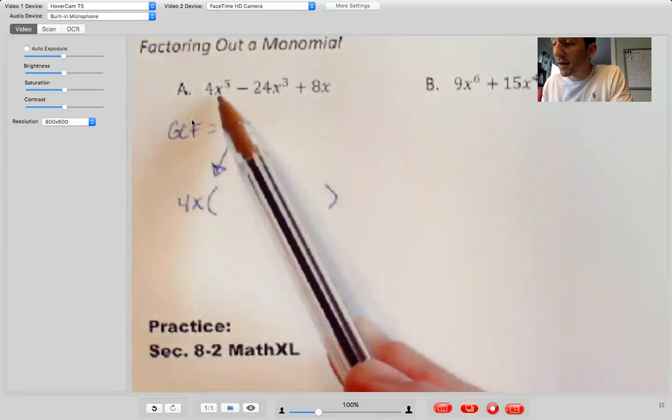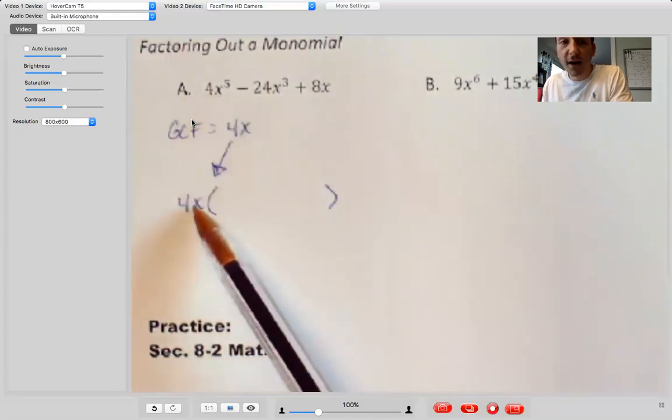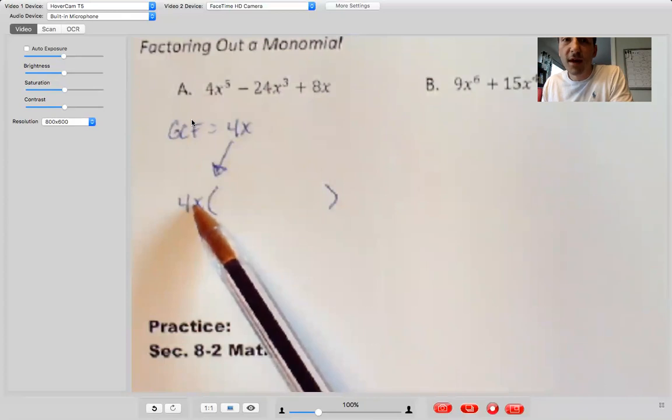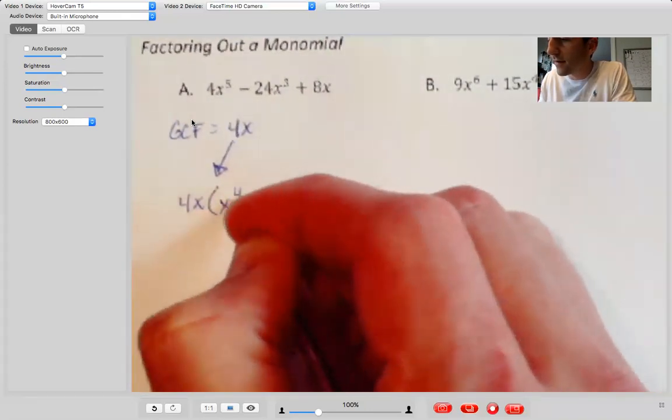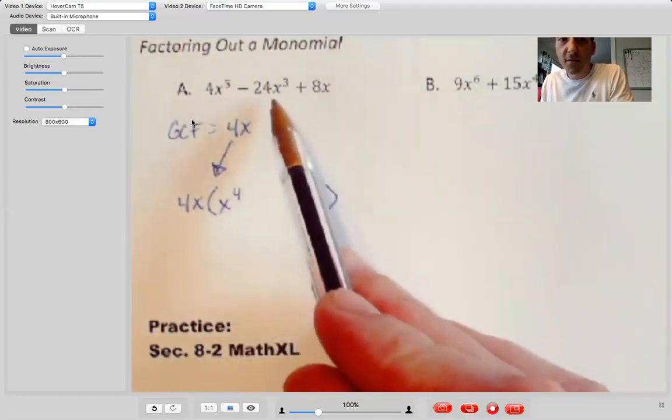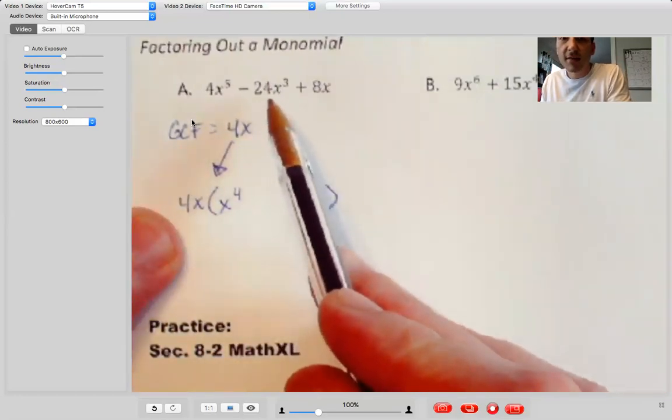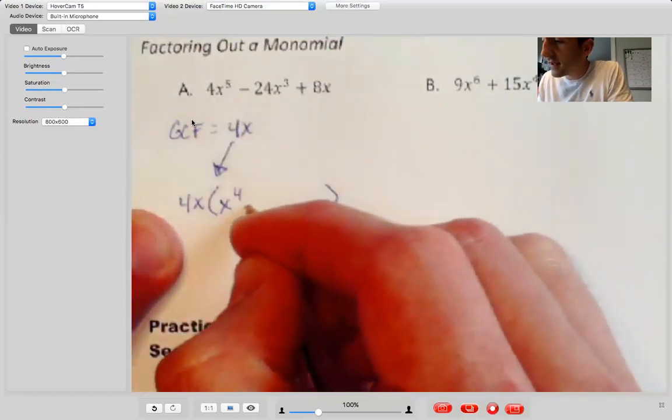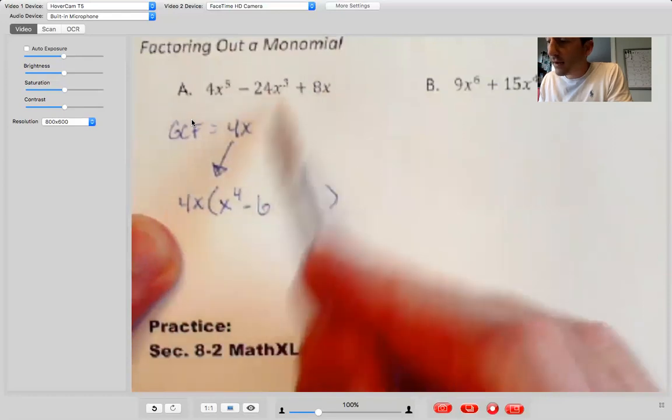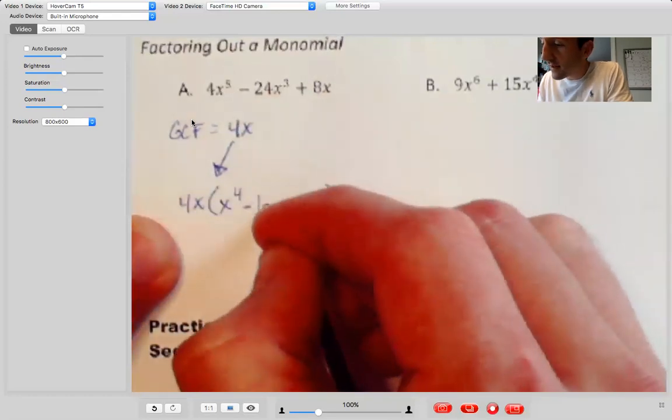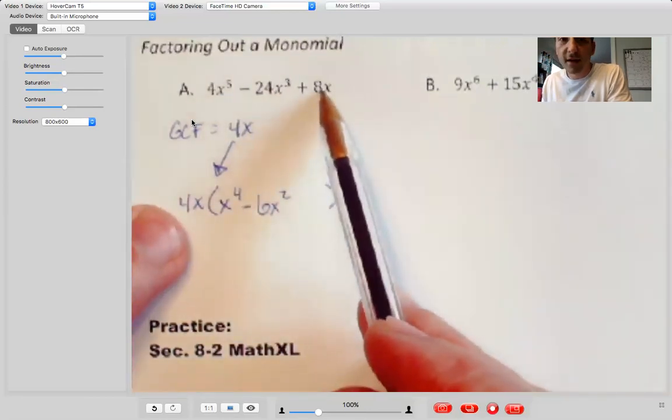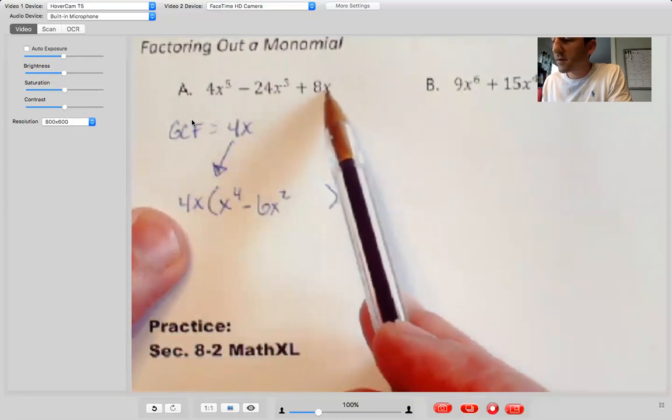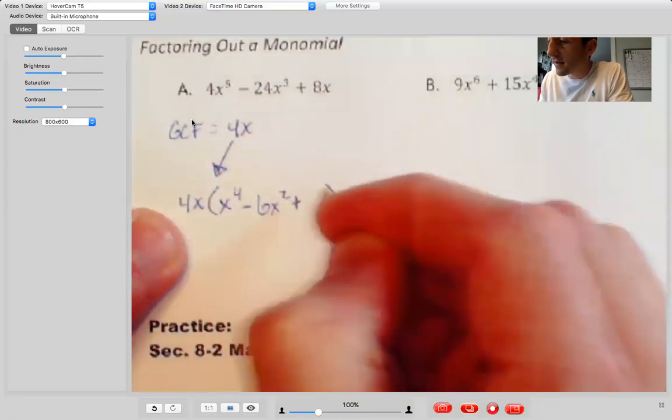So our first term is going to be whatever four X to the fifth over four X is. So four over four is one. X to the five over X to the one. There were subtracting exponents. So X to the fourth. So overall X to the fourth. Next one, minus 24 over four X, negative 24 over four is negative six. And then three minus one is two. So negative six X squared.